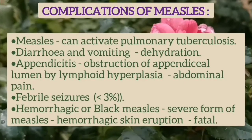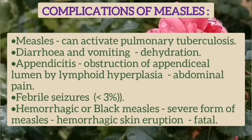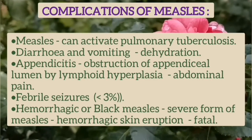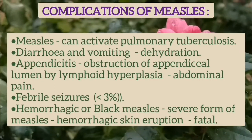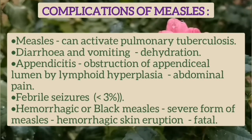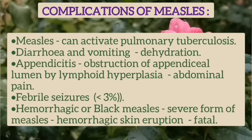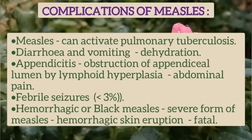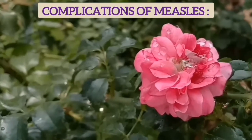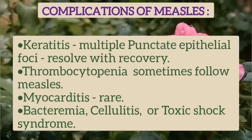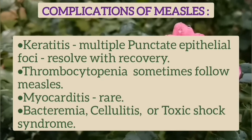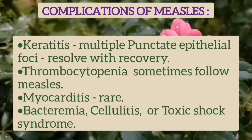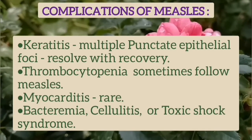Measles virus can activate pulmonary tuberculosis. There is diarrhea and vomiting, or appendicitis due to obstruction of the appendiceal lumen by lymphoid hyperplasia. There may be febrile seizures. A severe form of measles is hemorrhagic or black measles, associated with hemorrhagic skin eruptions, and is usually fatal. Other complications include keratitis with multiple punctate epithelial foci, thrombocytopenia, myocarditis, bacteremia, cellulitis, or toxic shock syndrome.